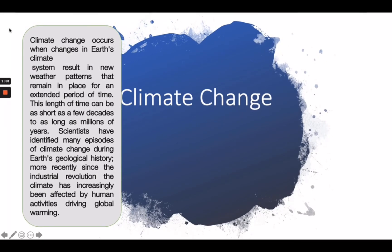So, to reiterate, climate change occurs when changes on Earth's climate system result in new weather patterns that remain in place for an extended period of time. This length of time can be as short as a few decades to as long as millions of years. Scientists have identified many episodes of climate change during Earth's geological history. More recently, since the industrial revolution, the climate has increasingly been affected by human activities and driving global warming.